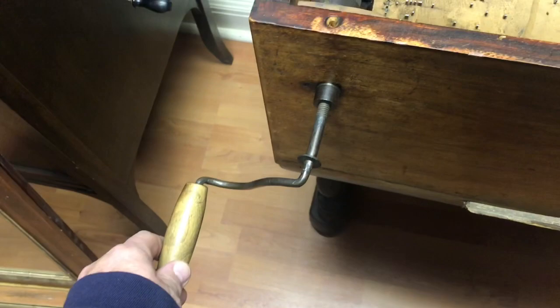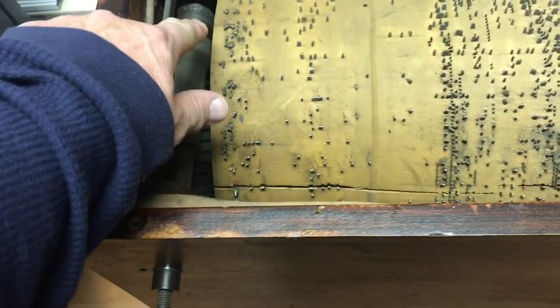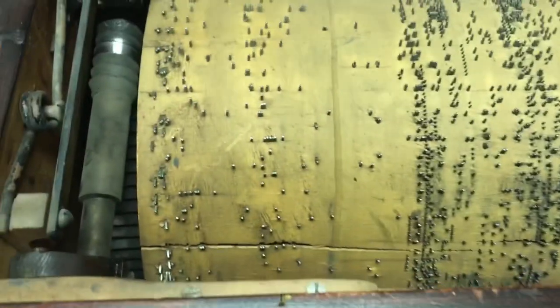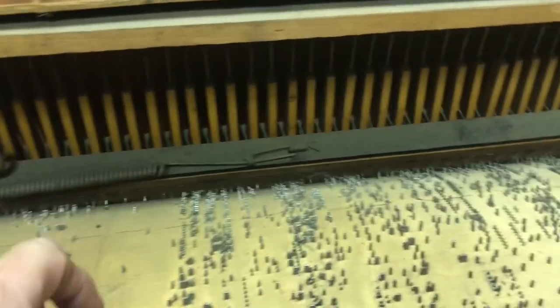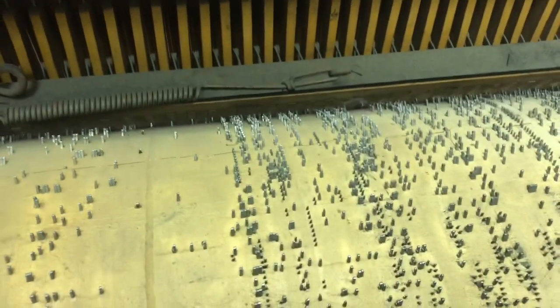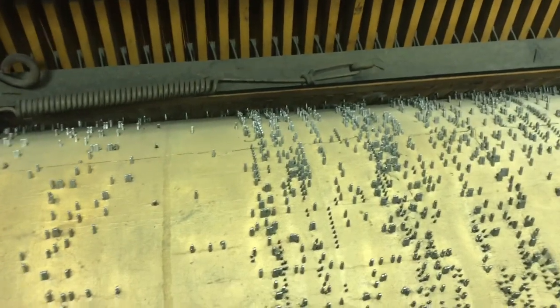Well, we can see this is where the crank goes, and it turns this worm gear, and this is the barrel, and with all those little pieces on it, and it trips the pieces in the back to make a tune.